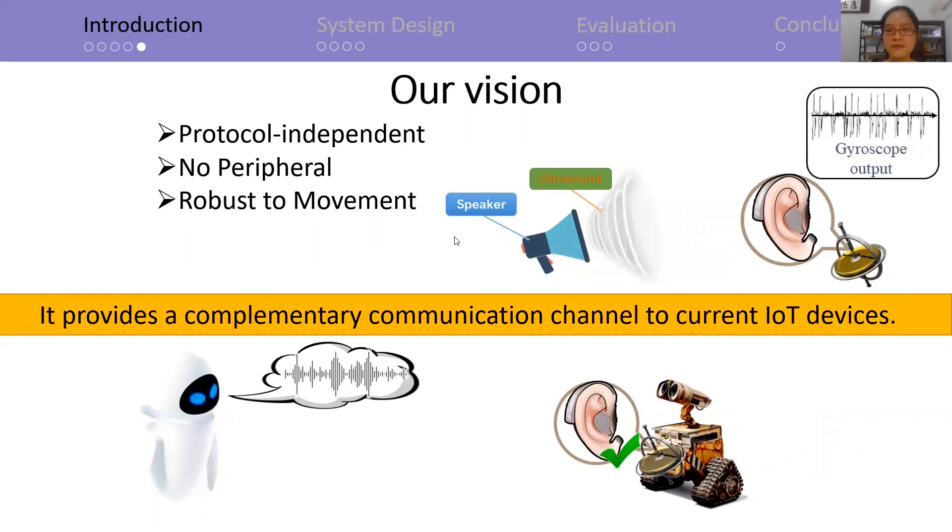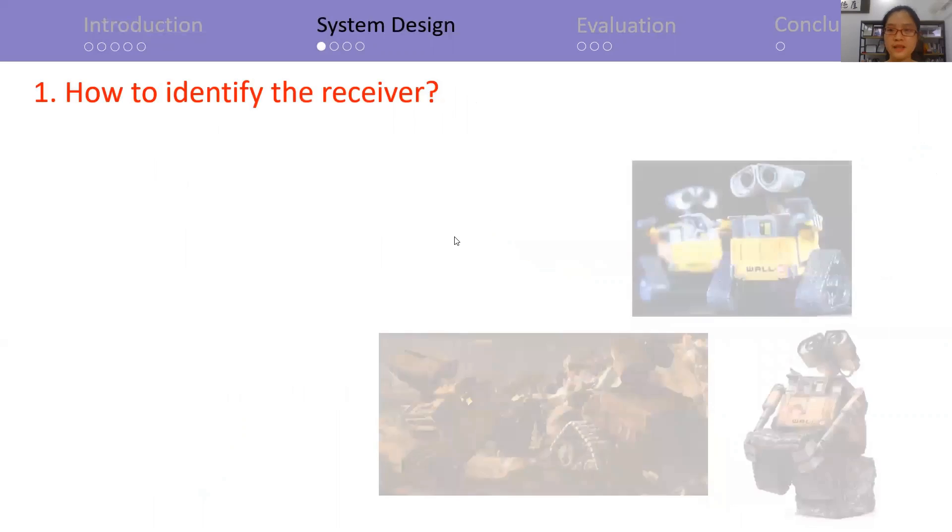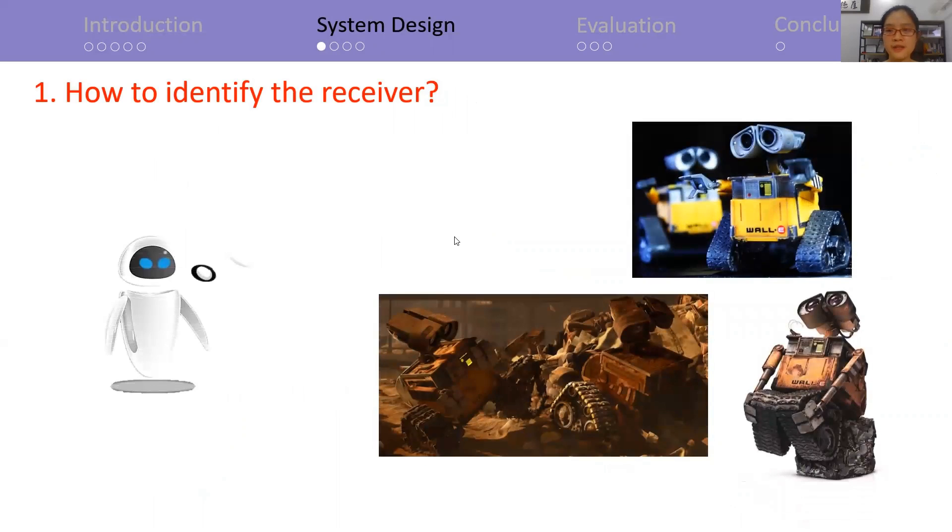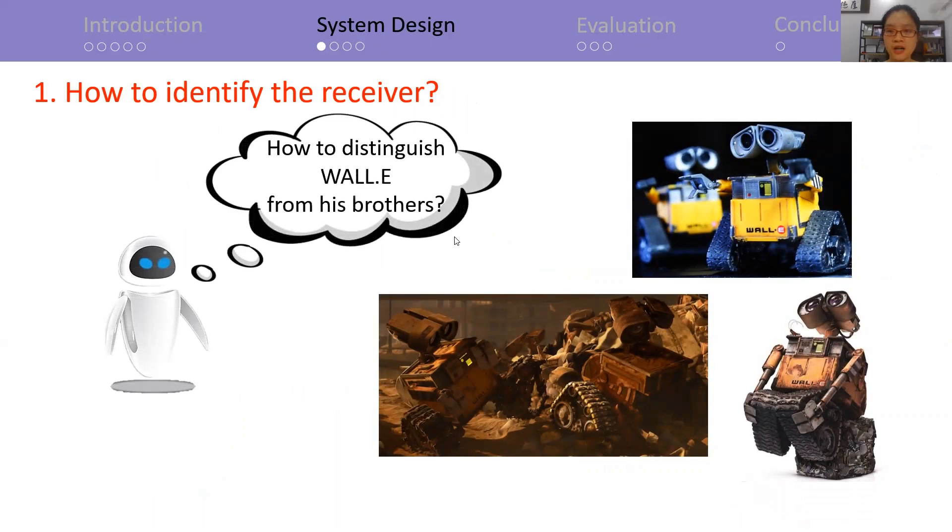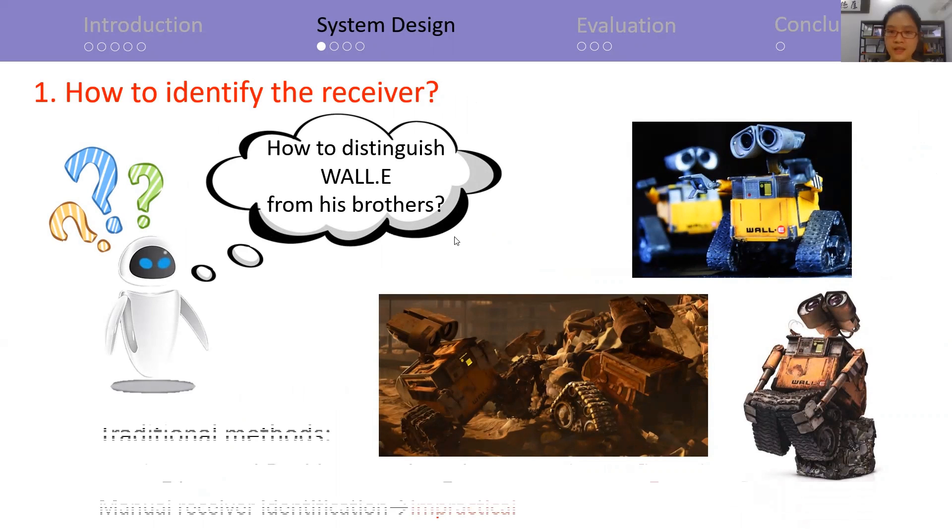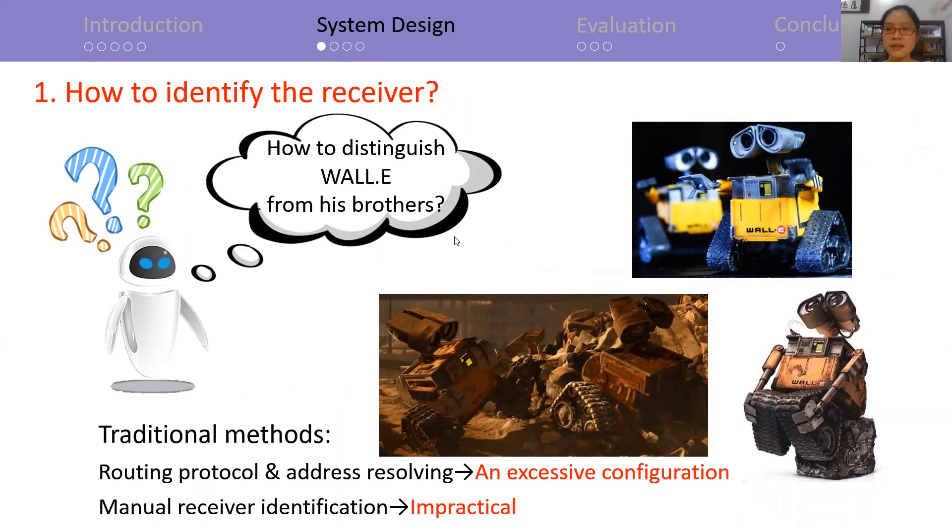However, to achieve this, we have to address several challenges. First, how to identify the receiver in a dynamic IoT network? This means we must guarantee that the receiver is WALL-E when EVE shares secrets with him. Traditional methods require excessive configuration or manual identification, which are impractical here.